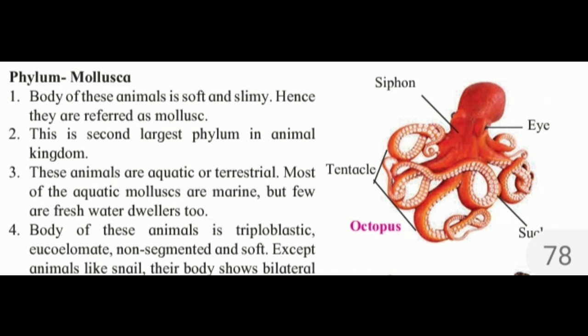Phylum Mollusca: the body of these animals is soft and slimy, hence they are referred to as mollusks. This is the second largest phylum in the animal kingdom. These animals are aquatic or terrestrial. Most of the aquatic mollusks are marine, but few are freshwater dwellers too.